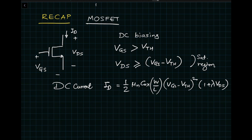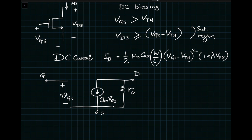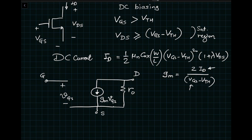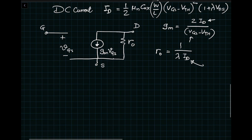For AC analysis, the small signal model has a current source Gm×VGS flowing from drain to source and Rout as the output resistance of the MOSFET. Transconductance Gm equals 2×ID divided by (VGS − VTH), where ID and VGS are DC values. Output resistance Rout is given by 1 / (λ × ID), where ID is also a DC value. Let's look at the transfer characteristics one more time.